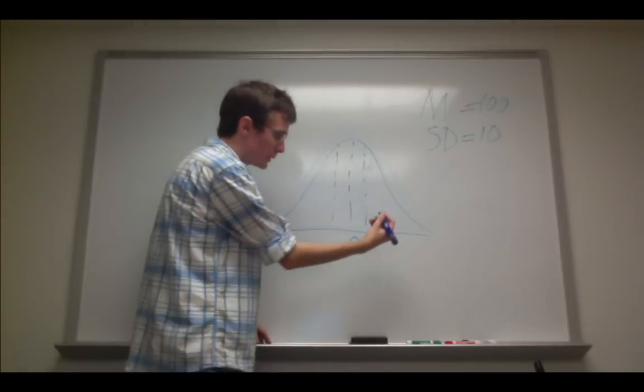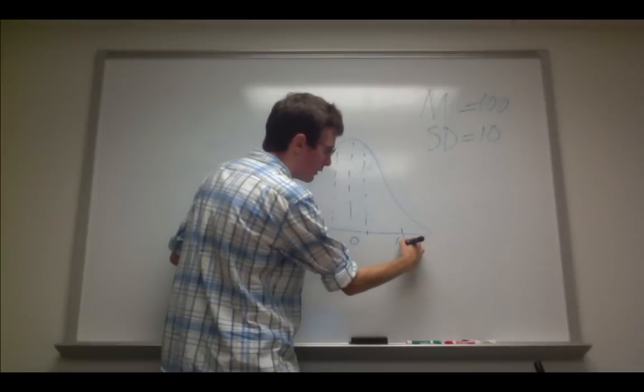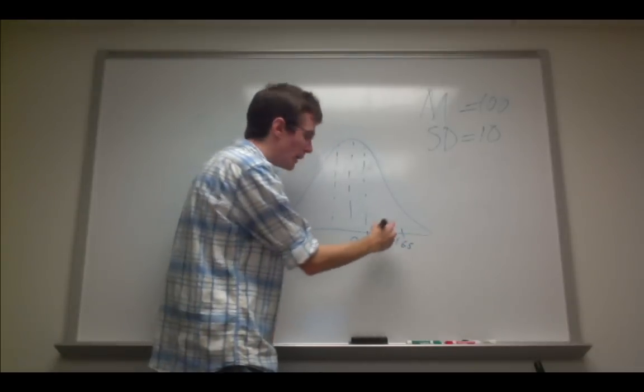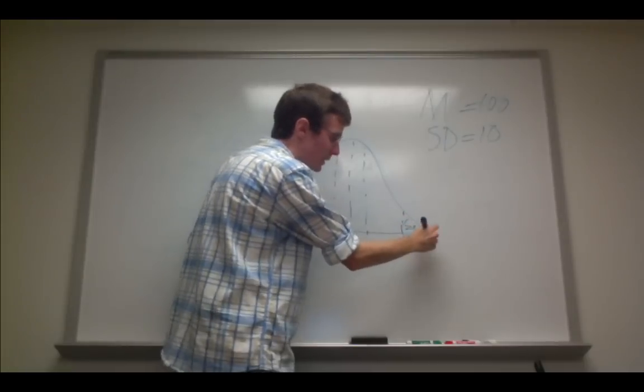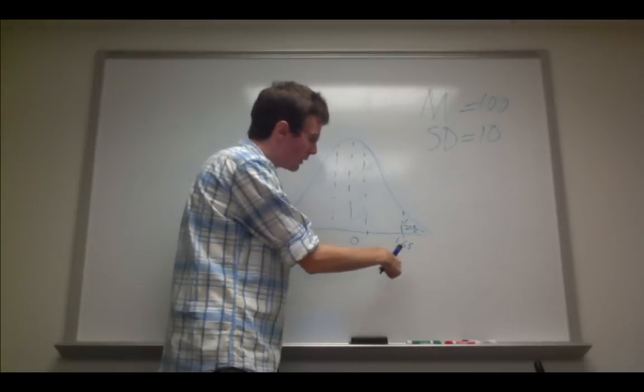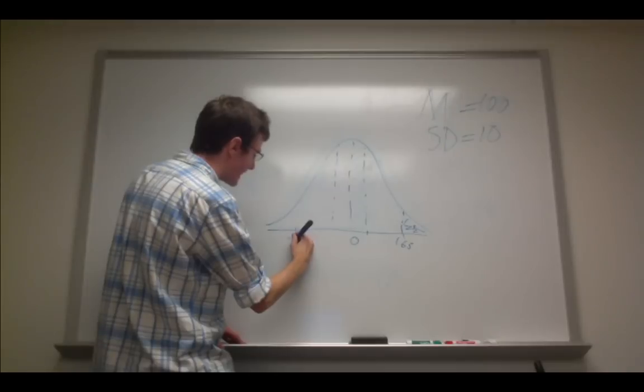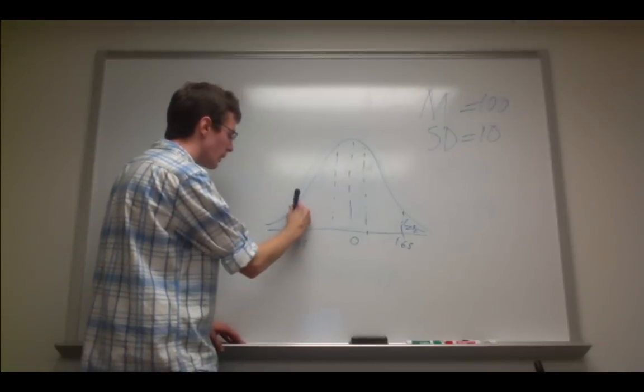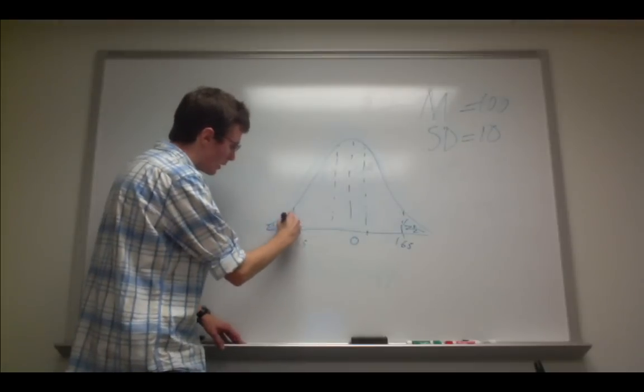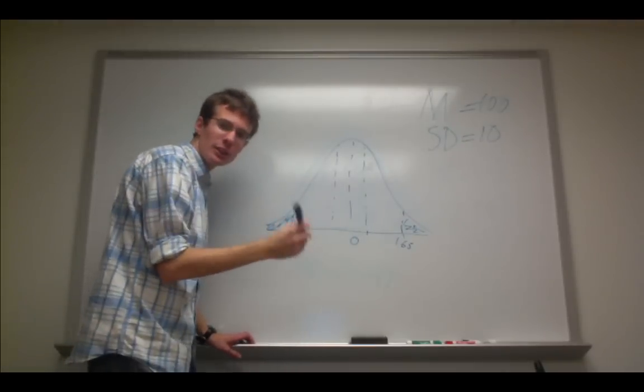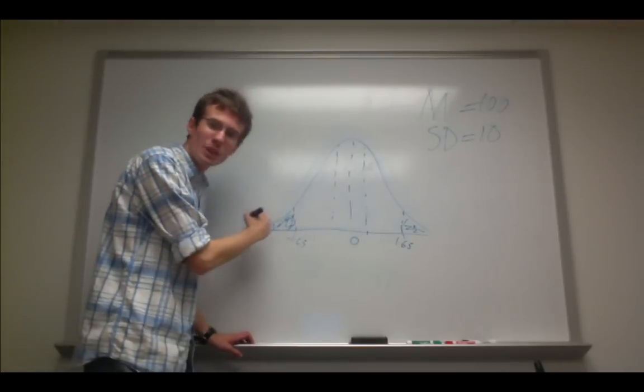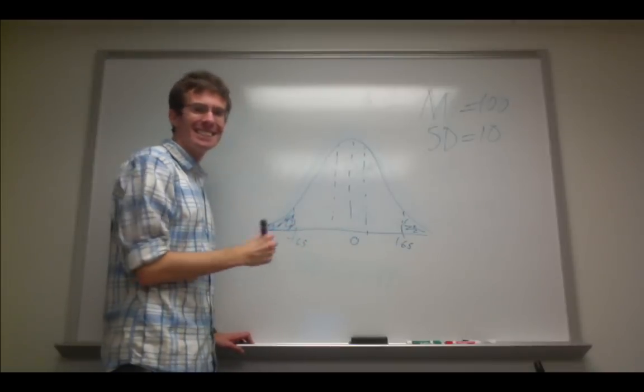If I flip that around, I have a positive z-score of 1.65, and I know that 5% is left in this tail here. If I flip it around and I had a score of negative 1.65, that would mean that 5% of the distribution lies between the lower tail and this z-score.